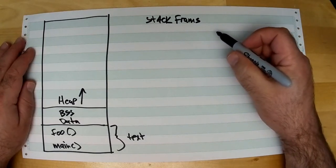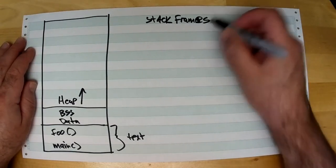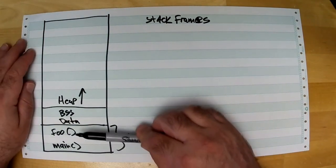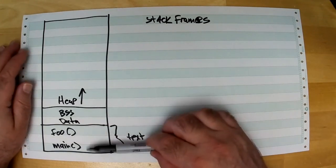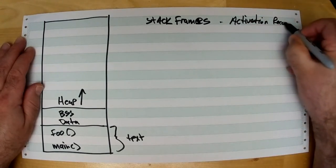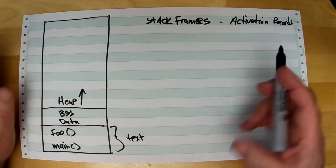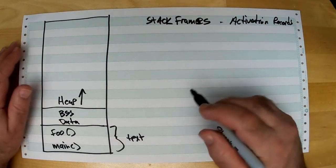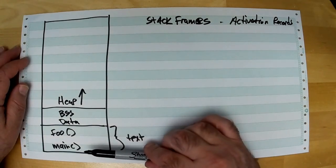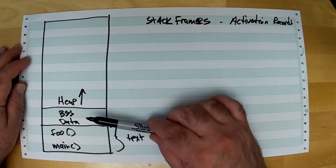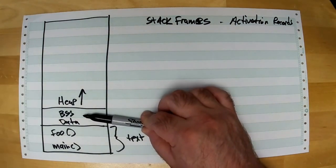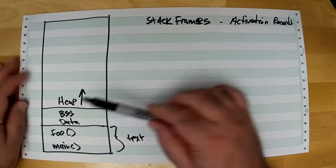One stack frame is created every time a subroutine or function is called. These are known by other names like activation records or activation frames — all these words mean the same thing. When main executes, it can have data variables located in the BSS and data region if you define them there. But if it had local variables, where do they go?